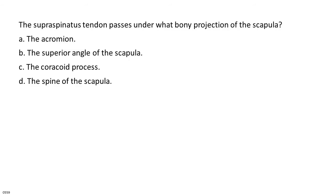The supraspinatus tendon passes under what bony projection of the scapula? A. The acromion. B. The superior angle of the scapula. C. The coracoid process. D. The spine of the scapula.